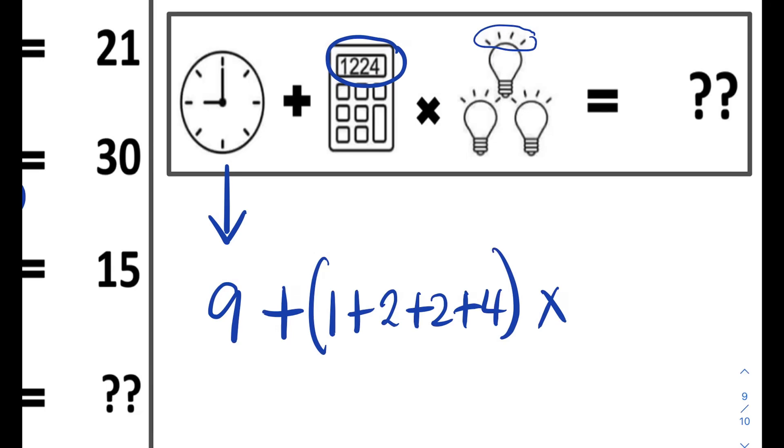We also learned that each tick mark corresponds to 3. So this means this will be 12, 12, and 12. So if we have three bulbs, the brightness of the three bulbs will be 12 plus 12 plus 12.